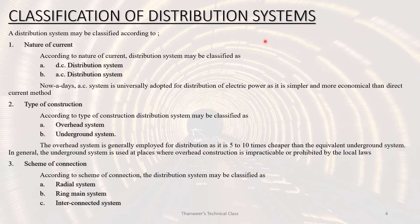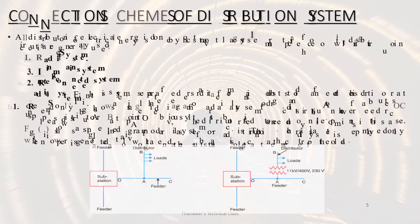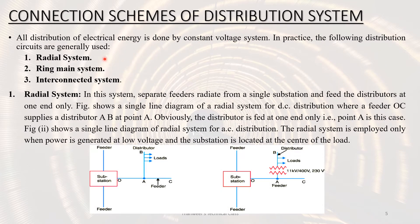The classification of distribution systems is based on the nature of current, type of construction, and scheme of connection. Nature of current: DC distribution and AC distribution — normally AC system is preferred. Type of construction: overhead and underground. Scheme of connection: radial system, ring main system, and interconnected system. All distribution of electrical energy is done by a constant voltage system.